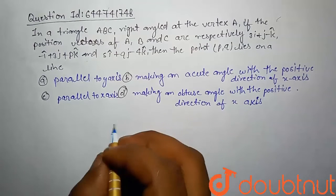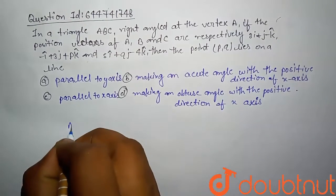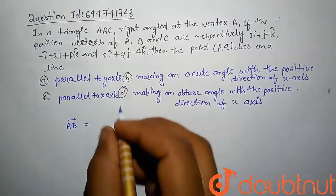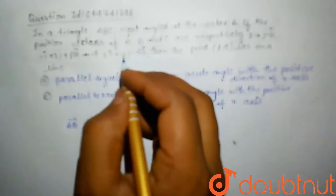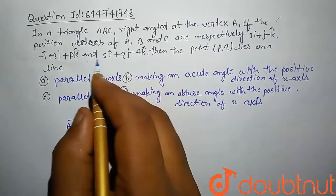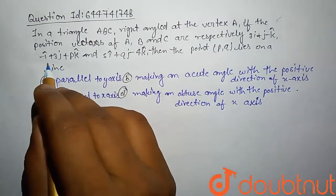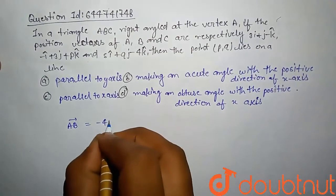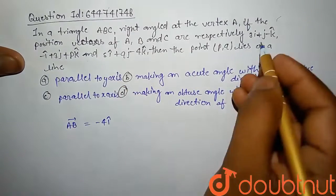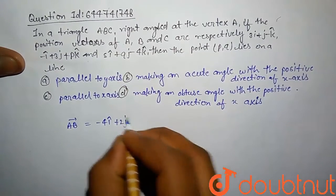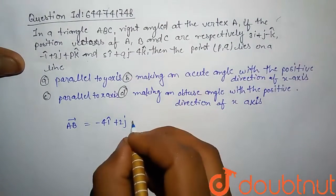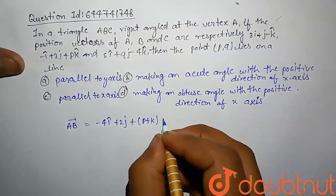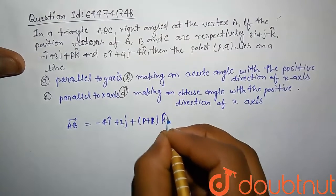First we have to find vector AB. Vector AB is the position vector of B minus position vector of A, which means -i cap minus 3i cap which is -4i cap, 3j cap minus j cap plus 2j cap, p cap minus minus plus k cap which is (p+1)k cap. This is vector AB.